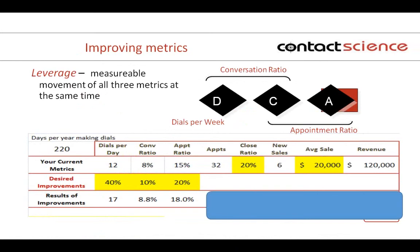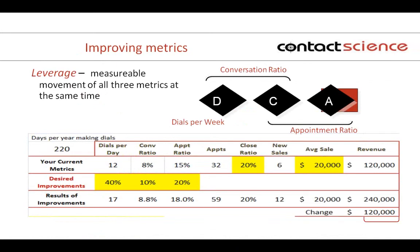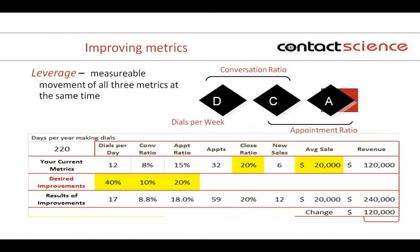This is what that really means. I'm going to move from 12 calls to 17 calls a day. I'm going to move from 8% to 8.8% in my conversations, and I'm going to improve from 15% to 18% in my appointments ratio. And I can tell you, if you don't measure metrics you'll never know or feel this improvement — it's impossible to notice this slight an improvement if you're doing this in a random fashion. So what's the result of just working on those three areas in a very minor way? We were able to move our appointments from 32 to 59, and he was able to double his number of sales and double his revenue. Very modest modifications produce very dramatic results when you begin at the start of the sales cycle in this business development process.